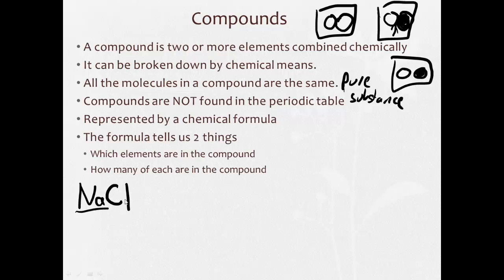So this formula tells us that there's sodium in this compound, and that there's chlorine in this compound. And since there's nothing here, that means there's one sodium and one chlorine. Except we don't write them when it's a one, so it's just NaCl.